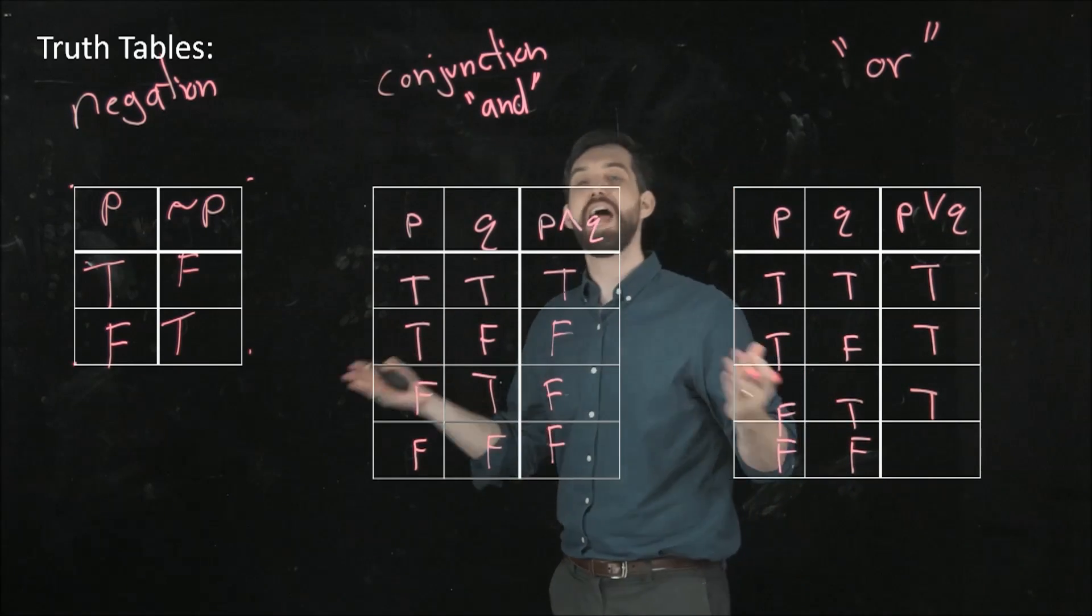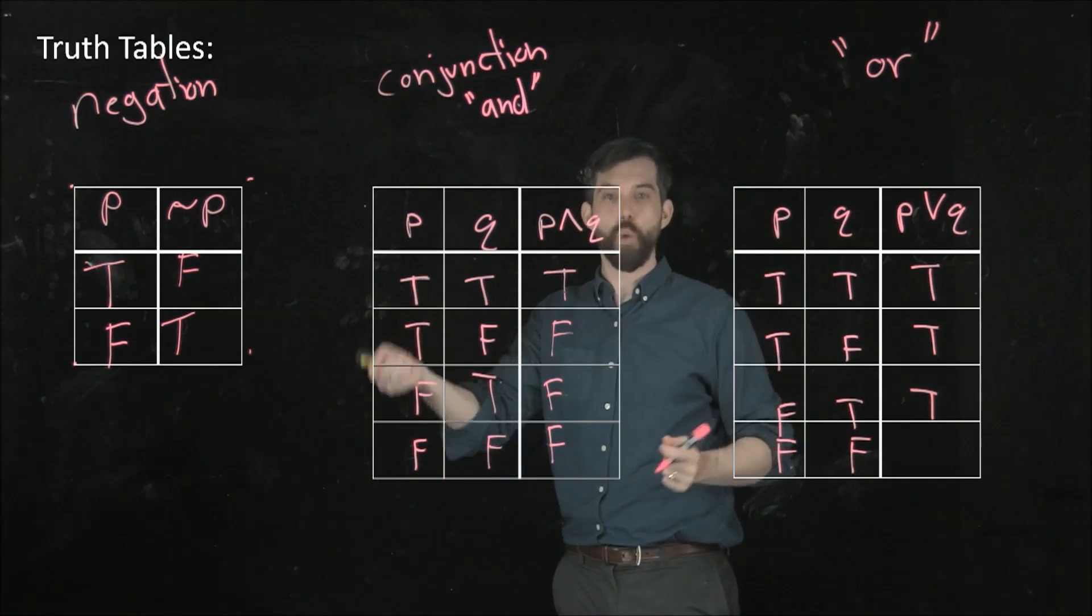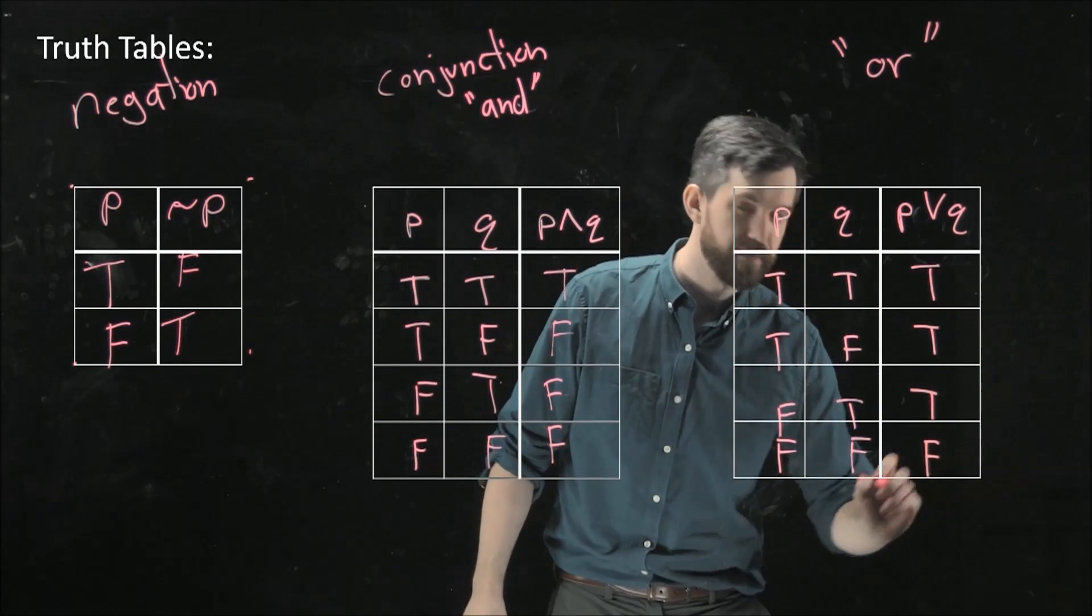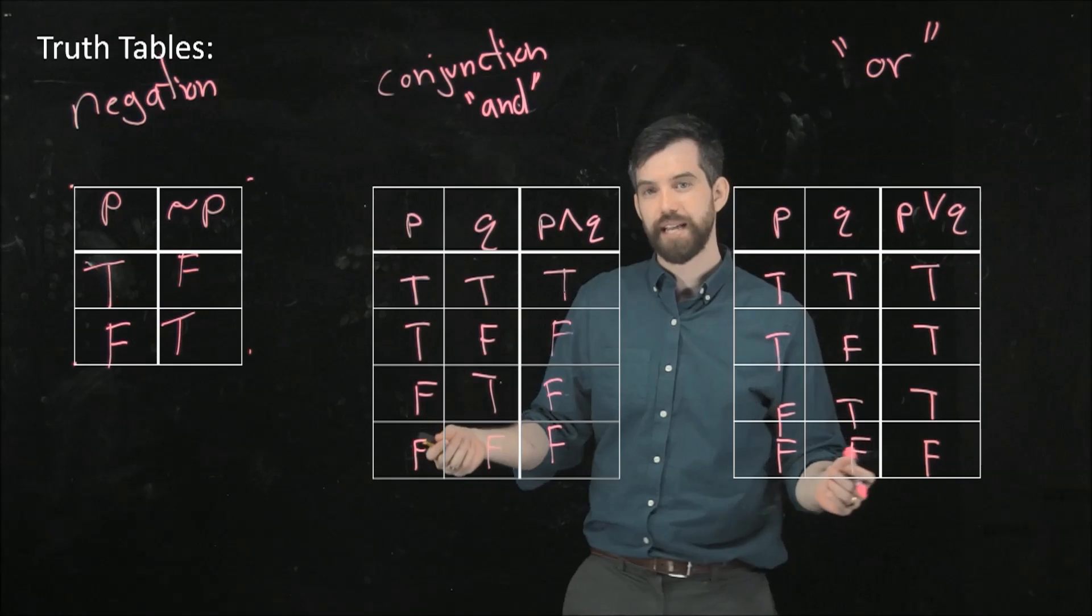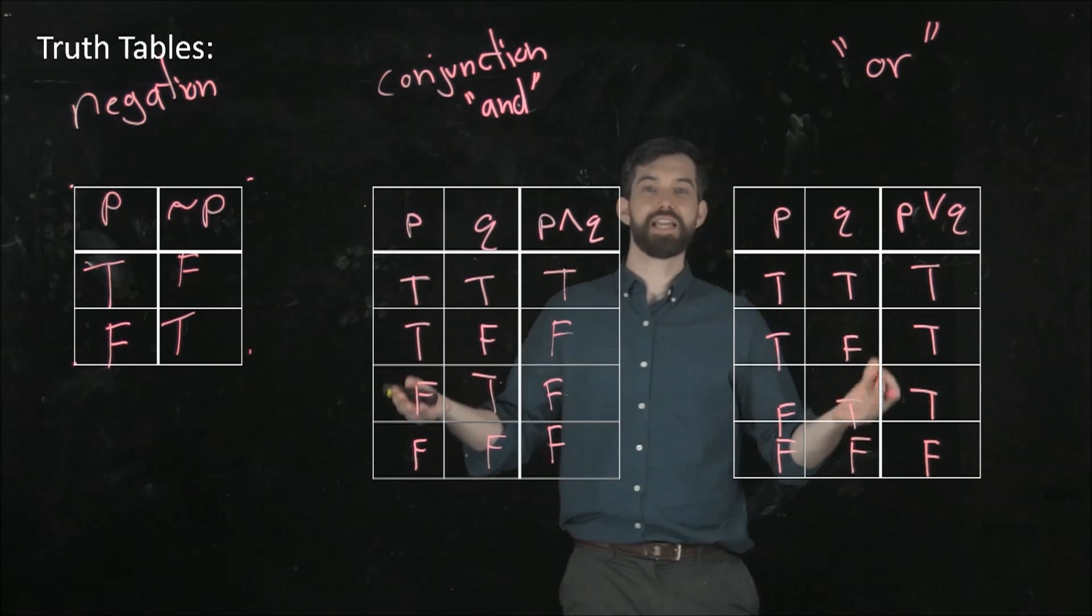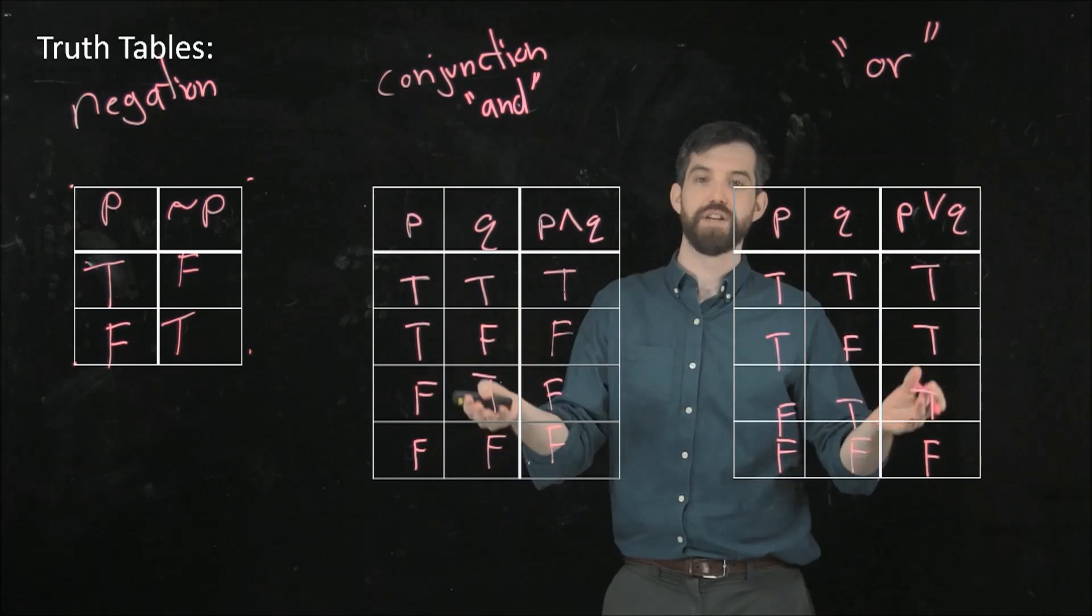And finally, false and false, now neither of them true. So it's not the case that one or the other of them is true, and so this is going to be false. So these are truth tables, and they allow us to capture these various statements in a really, really nice and convenient way.